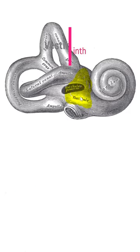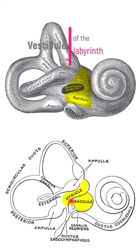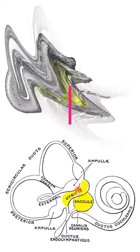In the inner ear, the vestibule is the central part of the bony labyrinth between the semicircular canals and the cochlea. It contains two sacs, the utricle and saccule, which are involved in static equilibrium.